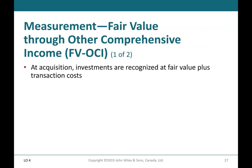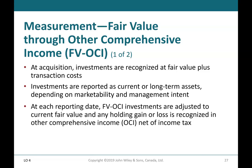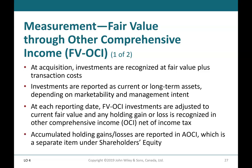Measurement — Fair Value Through Other Comprehensive Income (FV-OCI), Part 1 of 2. At acquisition, investments are recognized at fair value plus transaction costs. Investments are reported as current or long-term assets depending on marketability and management intent. At each reporting date, FV-OCI investments are adjusted to current fair value, and any holding gain or loss is recognized in other comprehensive income (OCI) net of income tax. Accumulated holding gains and losses are reported in accumulated OCI, which is a separate item under shareholders' equity.